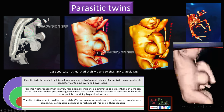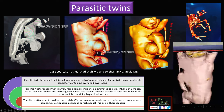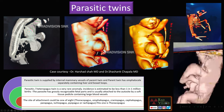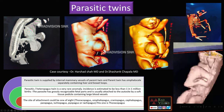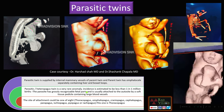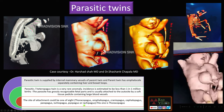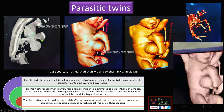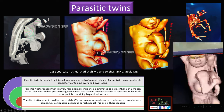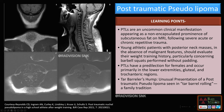The parasitic twin is a very rare anomaly with an estimated incidence of 1 in 1 million births. The parasite has grossly recognizable body parts and is usually attached to the autosite by a soft tissue pedicle containing large blood vessels. Common attachment sites include thoracopagus, omphalopagus, craniopagus, cephalopagus, parapagus, ischiopagus, pyopagus, and rachipagus. This case is thoracopagus, supplied by the internal mammary arteries, and the parent twin has an omphalocele containing liver and bowel.